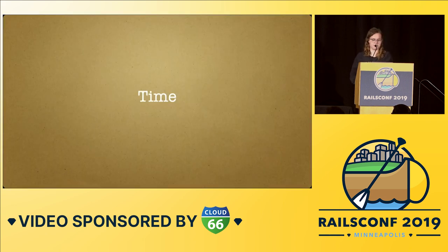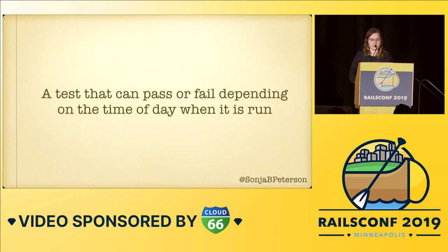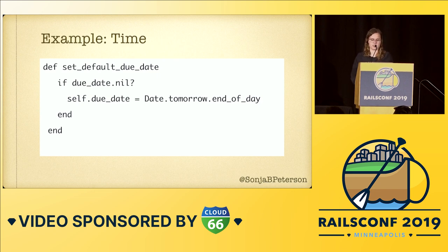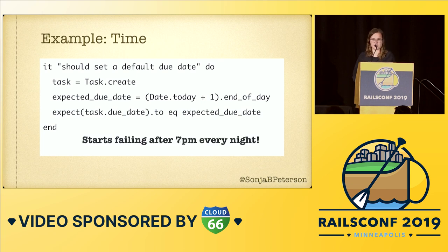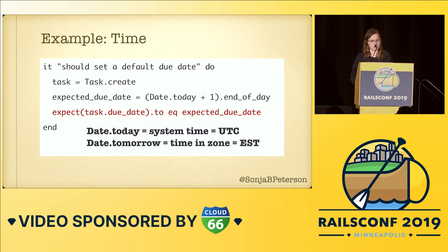Our next suspect is time — probably the one that gives me the most headaches. This category includes any test that can pass or fail depending on the time of day it is run. Imagine code in a before-save hook on a task model that sets an automatic due date to the next day at end of day if no due date is specified. A test creates a task with no due date and checks that the due date equals the current date plus one at end of day. But this test starts failing after 7 p.m. every night. The trouble is two slightly different ways of calculating tomorrow: `Date.tomorrow` uses the Rails app's time zone, while `Date.today + 1` is based on the system time. If the system time is in UTC and your Rails app is in EST, they're five hours apart, and after 7 p.m. they'll be different days.